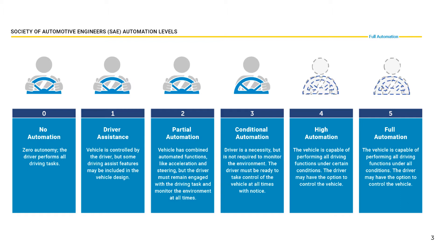Let's start with level 5. Level 5 corresponds to a completely autonomous car. These cars don't exist today. A level 5 car is a car that you can call and it will show up at your door. It will ask you where you want to go, and it will get you there while you relax in the back. Think of a taxi, but without a taxi driver, and completely missing the pedals or the steering wheel.